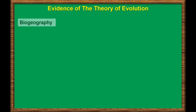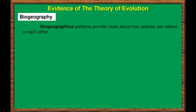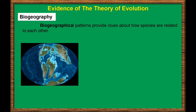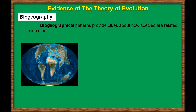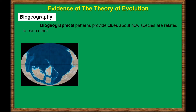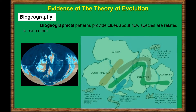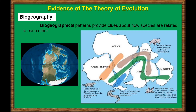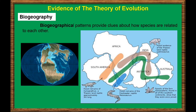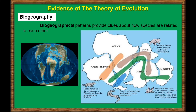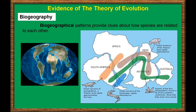The next evidence is biogeographical patterns, which provides clues about how species are related to each other. The geographic distribution of organisms on Earth follows patterns that are best explained by evolution in combination with the movement of tectonic plates over geological time. For example, broad groupings of organisms that had already evolved before the breakup of the supercontinent Pangea tend to be distributed worldwide. In contrast, broad groupings that evolved after the breakup tend to appear uniquely in smaller regions of Earth.